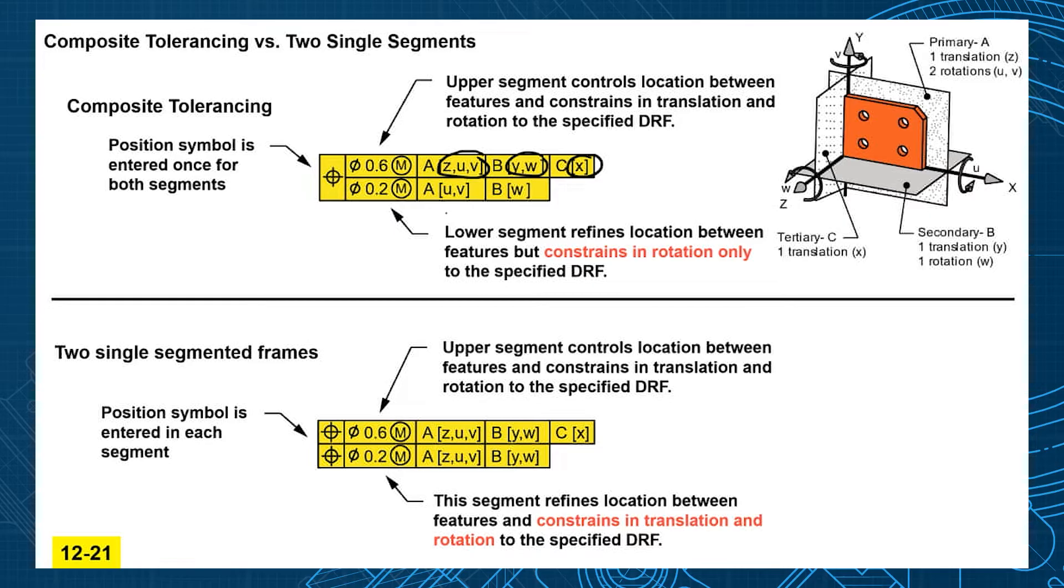The trick on the lower one is that whenever you put your datum A, you're unlocking the translational components here. You're not constrained in the Z direction anymore and you're not constrained in the W translation anymore.